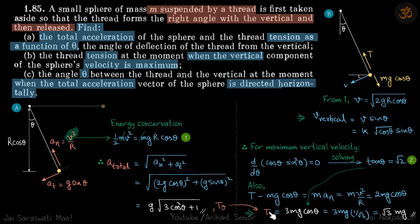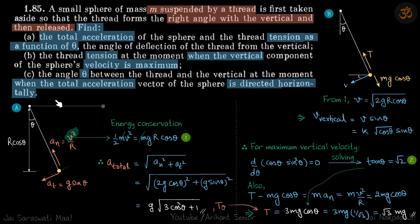When tanθ = √2, we need to find the tension. If tanθ = √2, then cosθ = 1/√3. Substituting into T = 3mg·cosθ gives tension T = 3mg·(1/√3) = √3·mg. That is the tension when the velocity in the vertical direction is maximum.